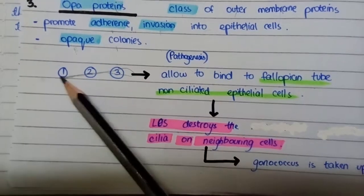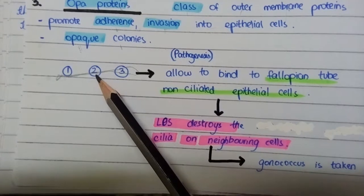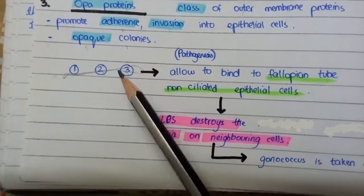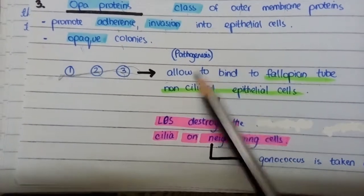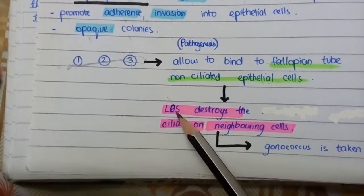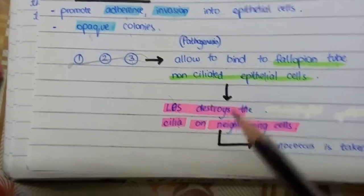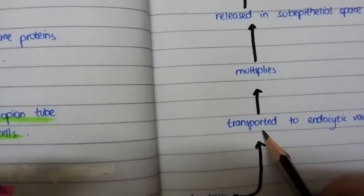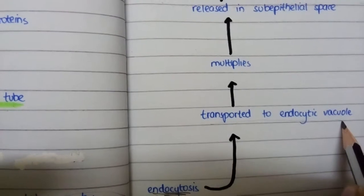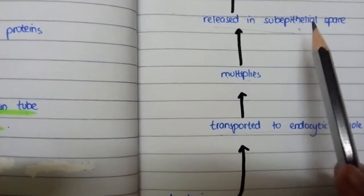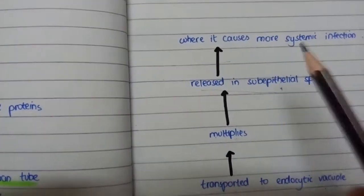The first three virulence factors — the pili, the porin outer membrane proteins, and the OPA proteins — allow the bacteria to bind to the non-ciliated epithelial cells of the fallopian tube. The endotoxin, the lipooligosaccharide, then destroys the cilia on the neighboring cells. By endocytosis, the bacteria are taken up by the host cells, transported into an endocytic vacuole where they multiply, and then released into the sub-epithelial space where they can cause more systemic infections.